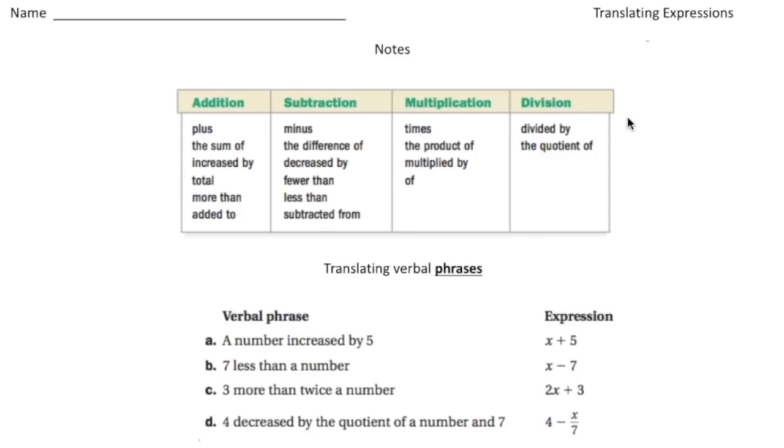So we're going to take an expression and try to write it with words. So here's some examples. Say if we have the expression x plus five, well this could be written as a number increased by five. Say if we have x minus seven, well this could be written as seven less than a number and so on.